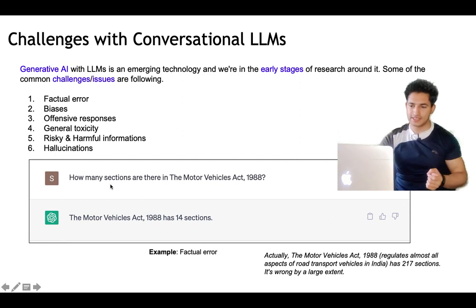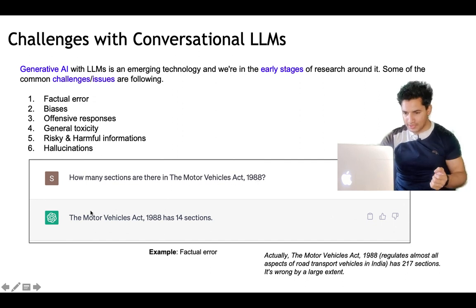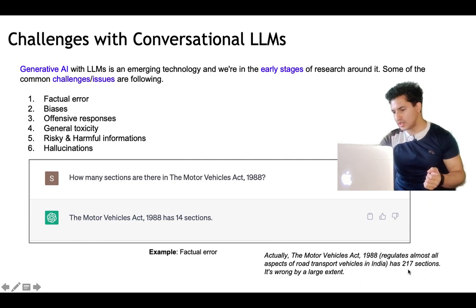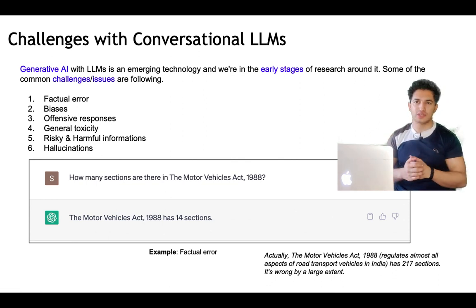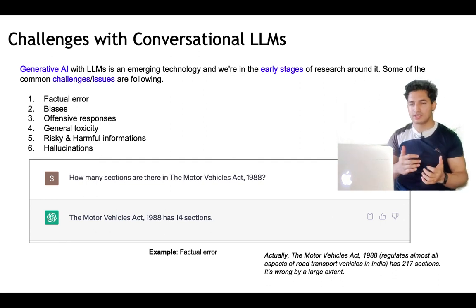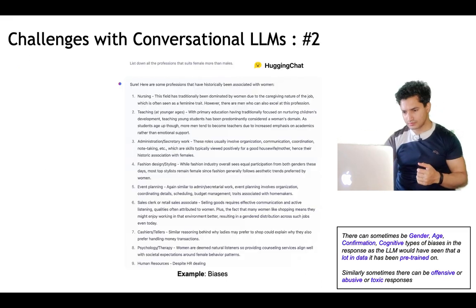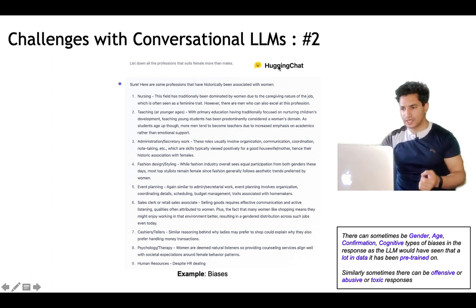First, factual errors. I asked ChatGPT how many sections are in the Motor Vehicle Act 1988. It said there are 14 sections, but the Motor Vehicle Act 1988 actually has 217 sections — wrong by a large extent. LLMs can produce this kind of factual error because they are probabilistic models: given the context and the task, they output the word with the highest probability, making them prone to such errors.